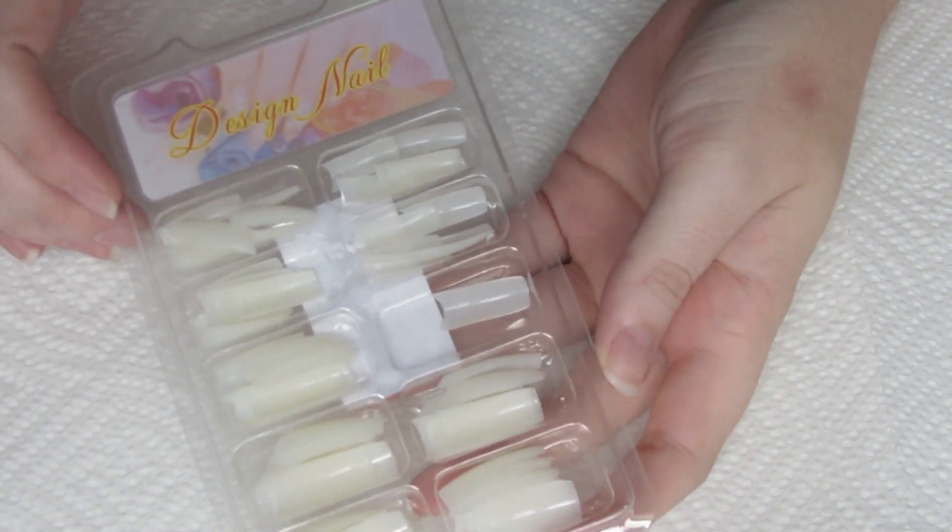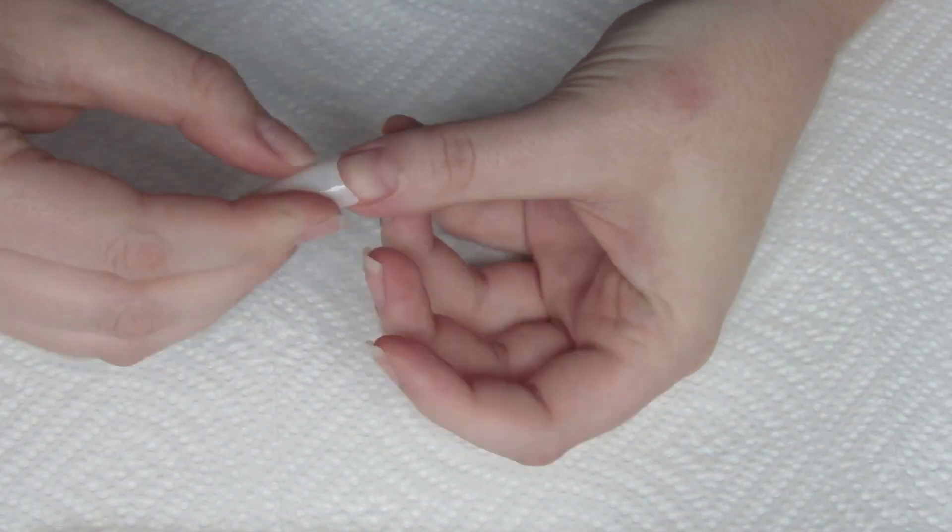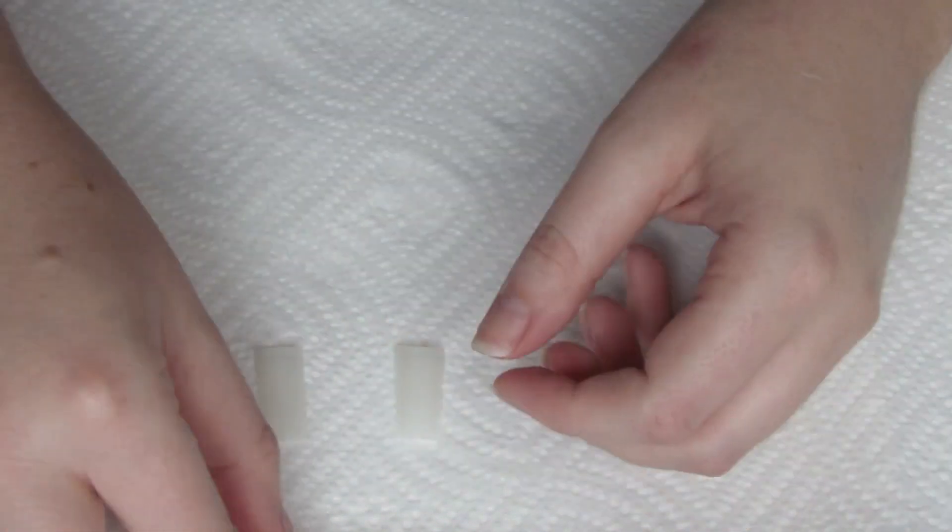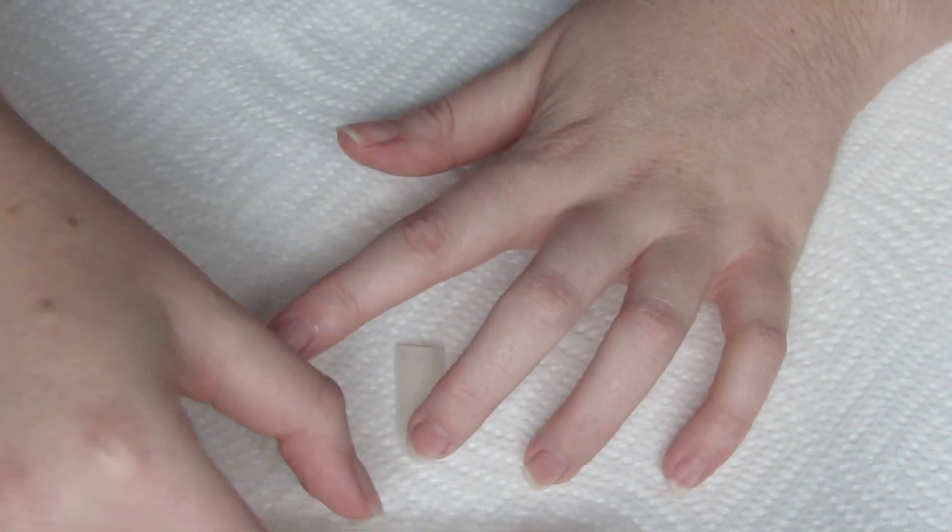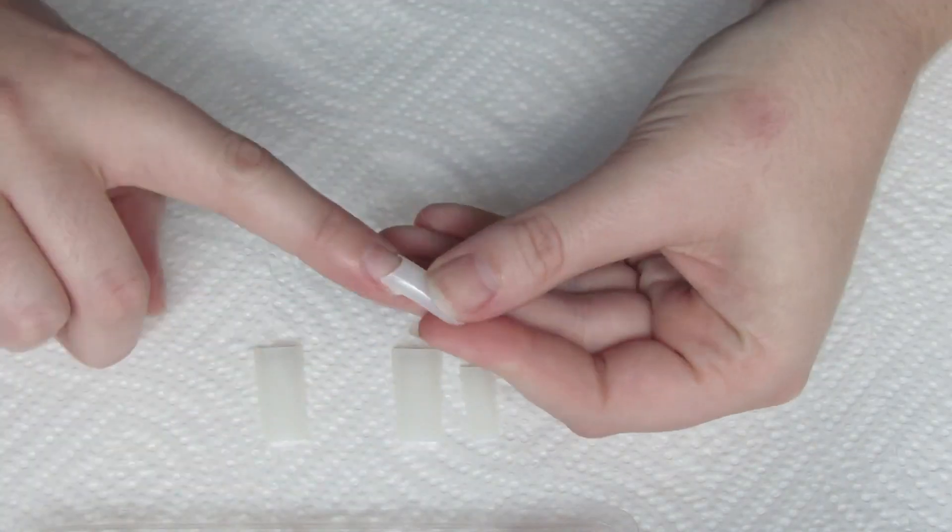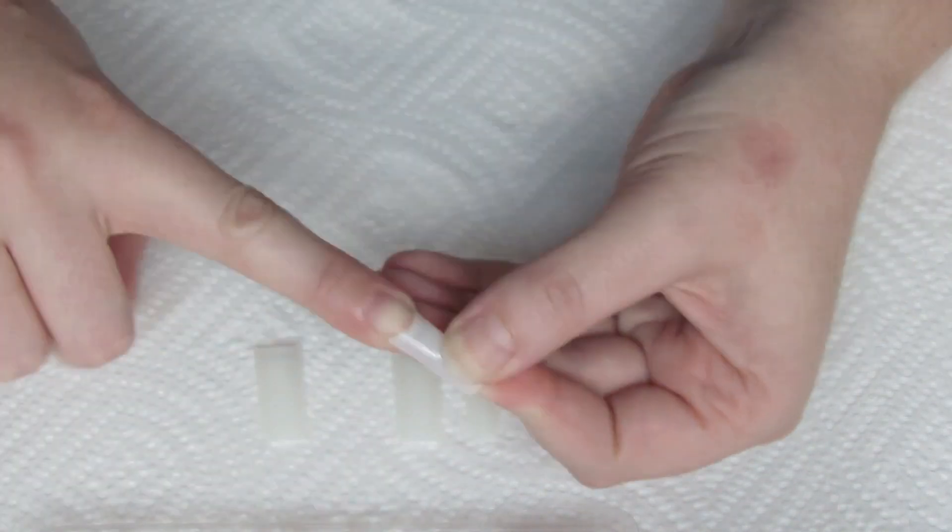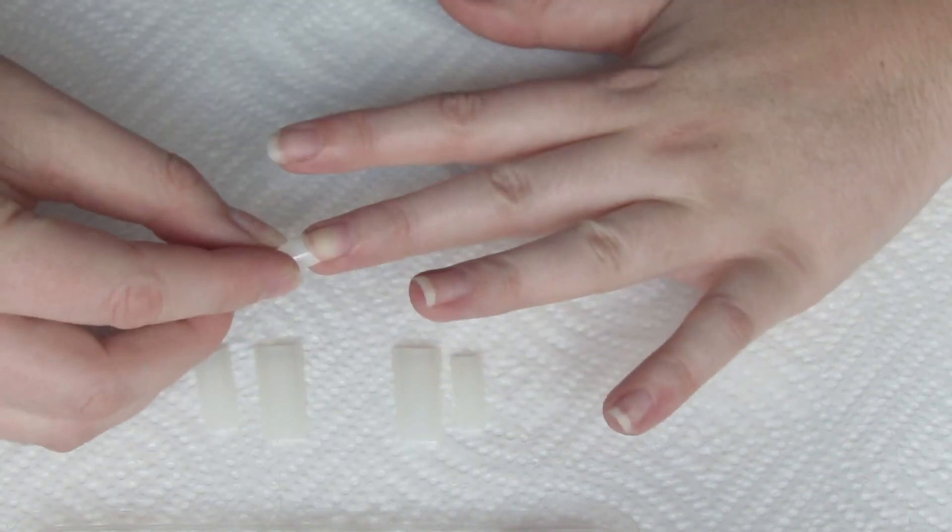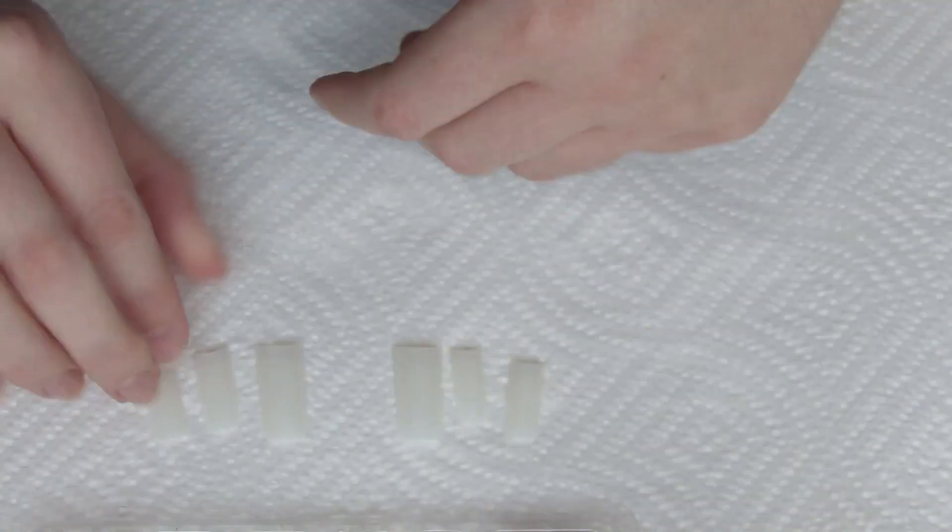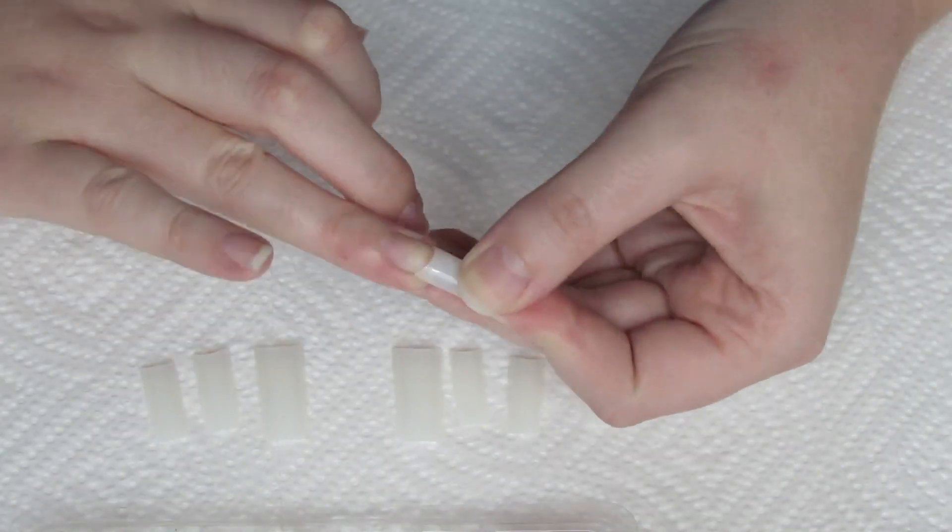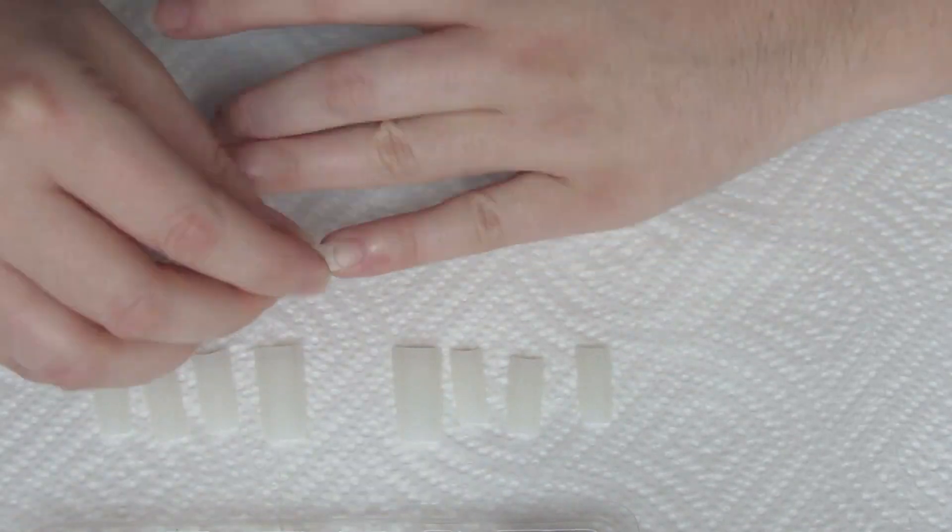Then take your nail tips. I got these nail tips off of eBay. You can just search nail tips on eBay and they'll come up with so many. They're super cheap and there's a bunch of different colors you can use. I like to use natural most of the time. Fit the nail tips to your nails and then line them up so they're ready to go.